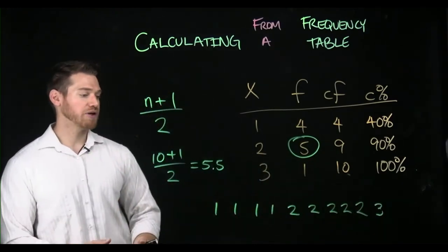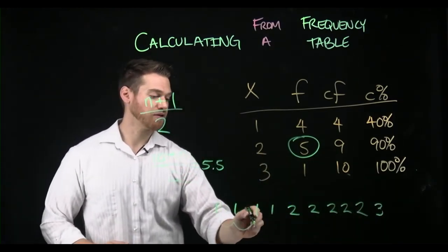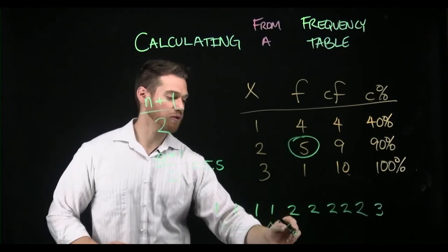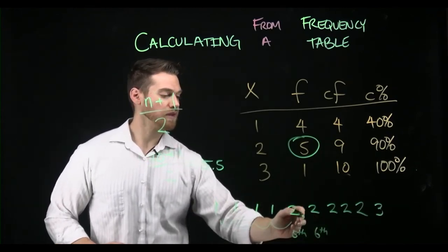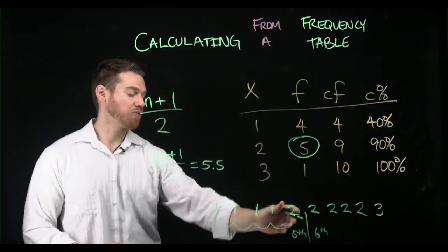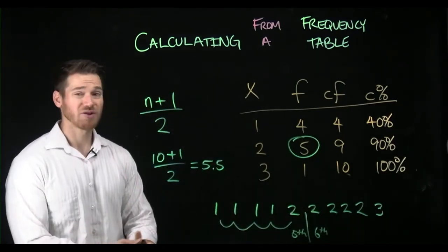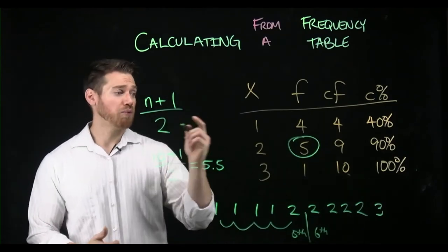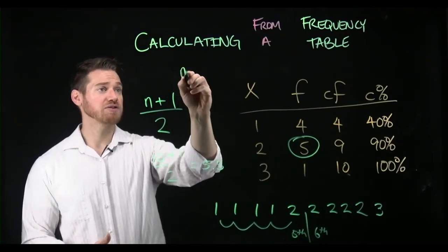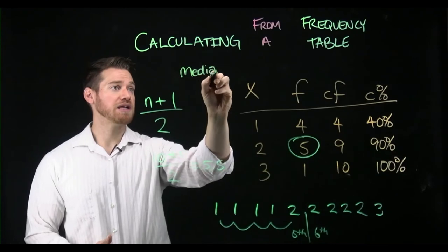So now we're gonna go to the second, third, fourth, fifth. There's the fifth score. There's the sixth score. And we're gonna be in between those. And the way we find the middle of those is average them. They're the same value here. So it's two. So we find that our mode is two. We also just found that our median is two.